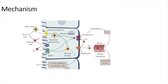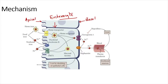Now let's understand the mechanism of iron absorption. The cell shown in the diagram is an enterocyte lining the duodenal mucosa. The apical portion faces the lumen of the duodenum, and the basolateral portion faces the bloodside. In the lumen we have two types of iron: heme iron and non-heme iron. Heme iron is easily absorbed via a heme transporter present in the apical membrane of the enterocyte.